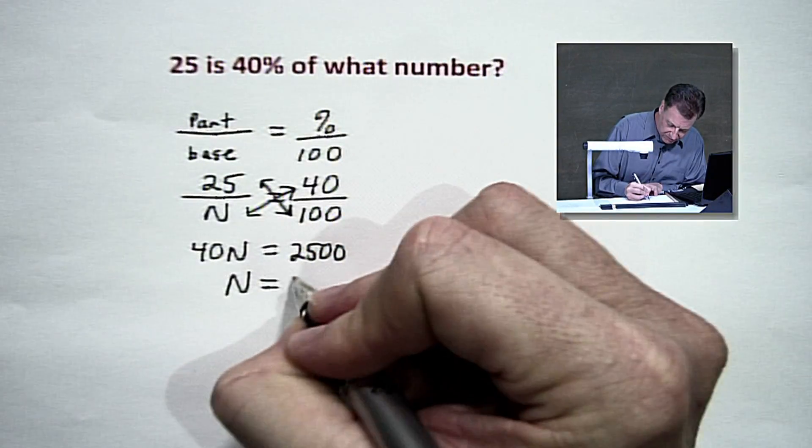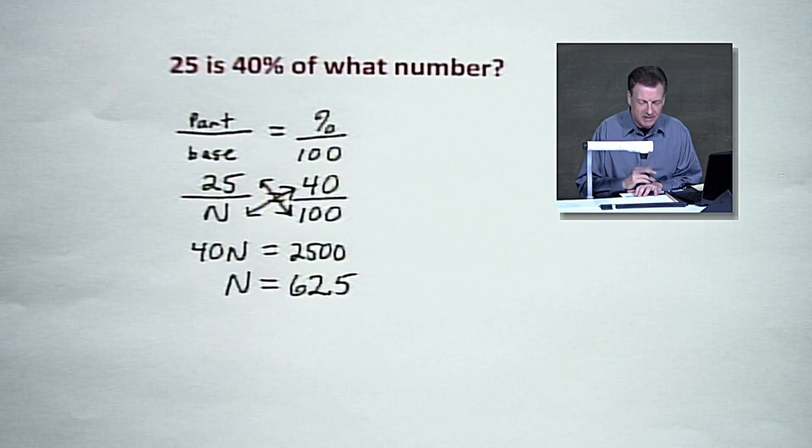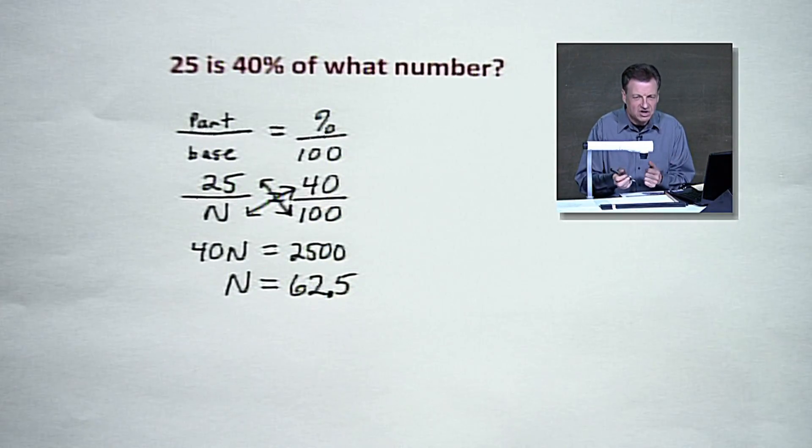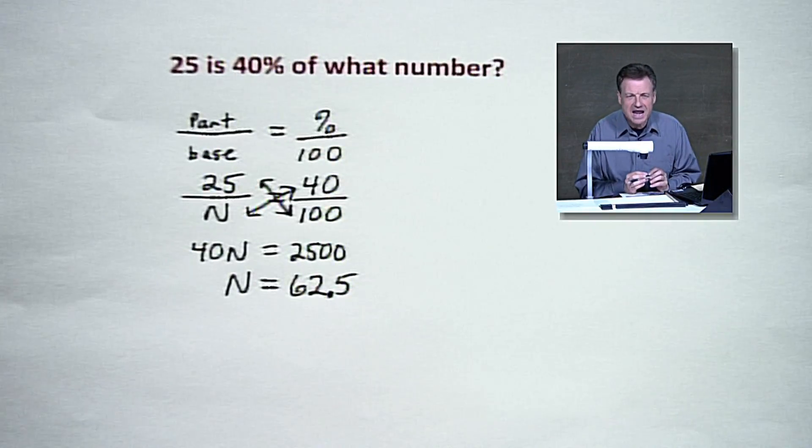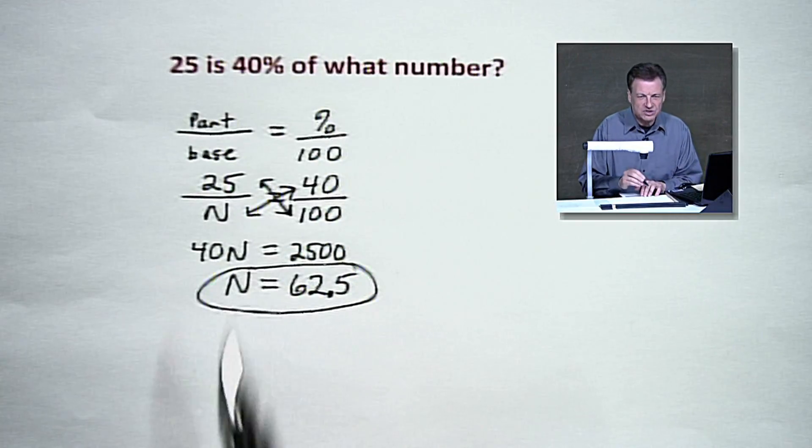So there's the number we started with. By the way, everyone, a base doesn't always have to be a nice whole number. This one's actually a nice mixed number: 62 and a half, 62 and five tenths, however you want to read that. But there we go. That is our value that we started with.